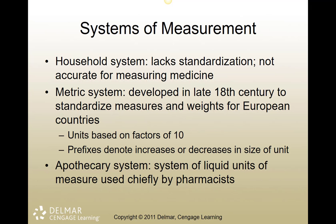There are three different systems that we look at. The first one is the household system — things like pounds and ounces. There's different standardization, like the Australian ounce, the English ounce, and the American ounce or fluid ounces, so there's a lack of standardization and not easy conversion.